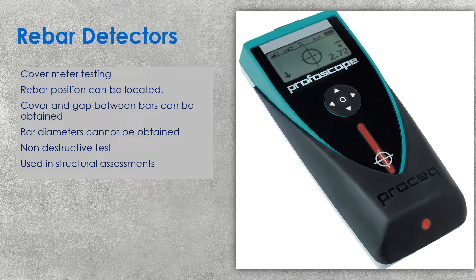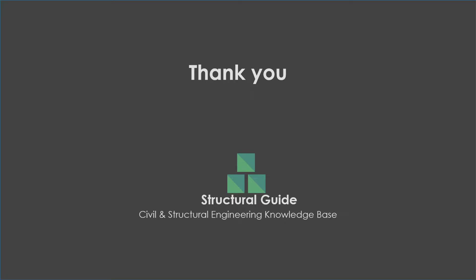However, there are some high-tech instruments that can also detect the rebar diameter. This method is very useful because, unlike the conventional method, we don't make any damage to the structure. Therefore, this method is most popular in structural assessment — when we need to find the capacity of a structure without damaging it, this is the best way. With that, we end today's discussion on rebar detection in beams, which can be applied to any kind of structural element.